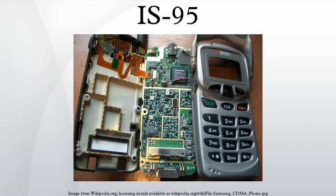P-REV 4 is termed Interim Standard 95B Phase I, and P-REV 5 is termed Interim Standard 95B Phase II. The IS-95B standards track provided for a merging of the TIA and ANSI standards tracks under the TIA, and was the first document that provided for interoperation of IS-95 mobile handsets in both band classes. P-REV 4 was by far the most popular variant of IS-95, with P-REV 5 only seeing minimal uptake in South Korea.